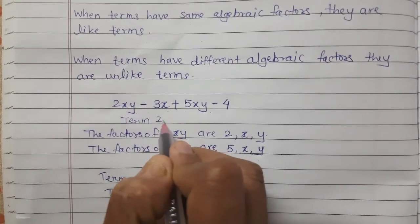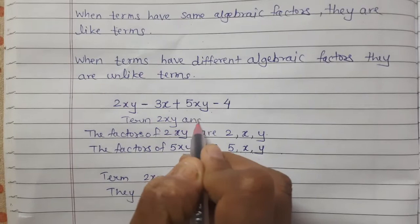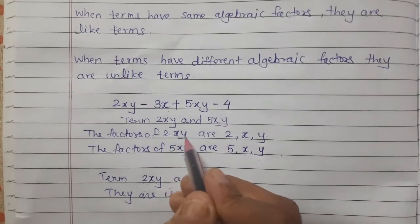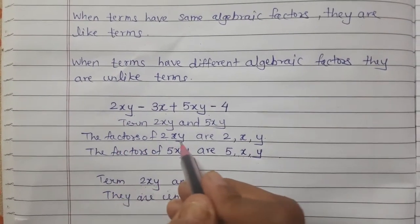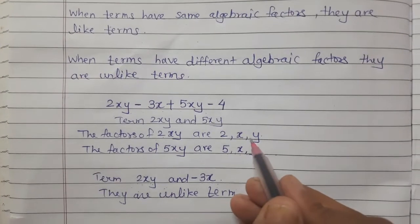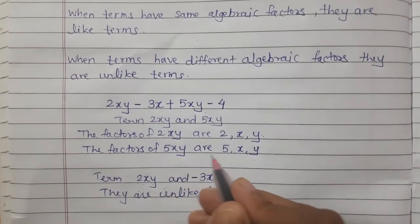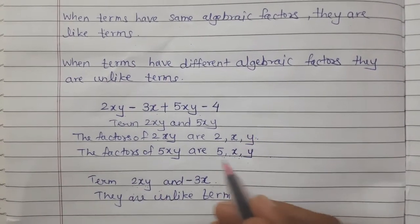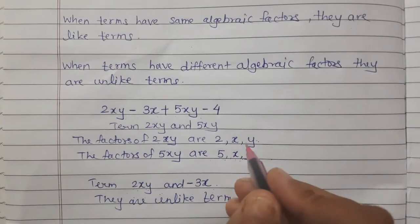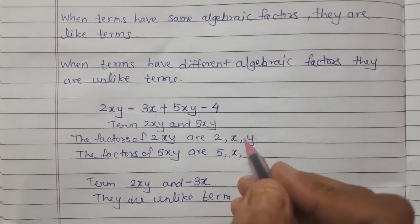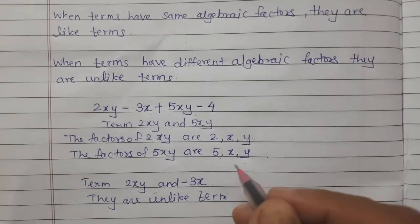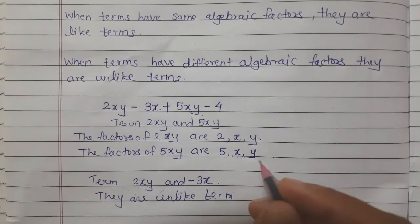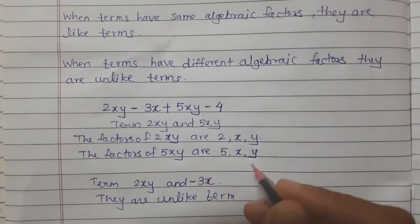In terms 2xy and 5xy, the factors of 2xy are 2, x, and y. The factors of 5xy are 5, x, and y. So they have same algebraic factors — these are like terms.